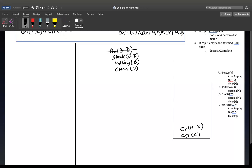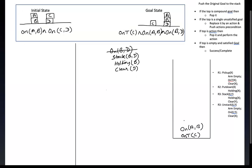The action is stack(b, d), with preconditions holding b and clear d. Now, at the top of the stack is clear d. Is clear d satisfied? Looking at the initial state, d is not clear — because on top of d there is c. So c is not clear, and this condition is unsatisfied.